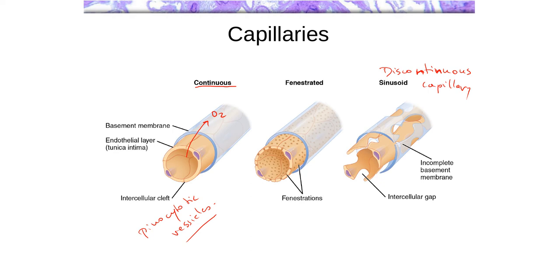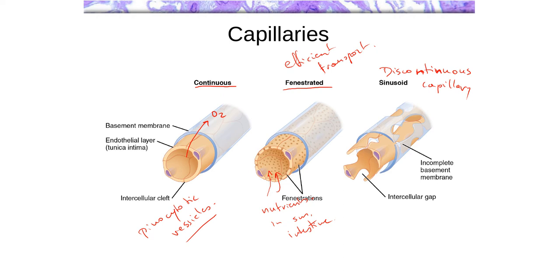With fenestrated capillaries, you have these wherever you need efficient transport — for example, in the small intestine, where nutrients need easy access into the bloodstream. Endocrine glands also have fenestrated capillaries, since hormone molecules need to be able to enter the bloodstream easily. In places where you need filtration or easy entry and exit for whole cells, you have discontinuous capillaries. These have large gaps that allow whole cells to either exit or enter the bloodstream.